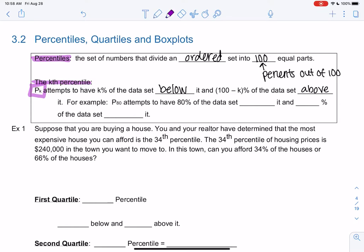Let's look at an actual number. If we have P sub 80, that means, that's what the little subscript is, it attempts to have 80% of the data set below it, and then 20% above. So 20 is just 100 minus 80 of the data set above it. So if you're in the 80th percentile of height, it means you're taller than 80% of people.